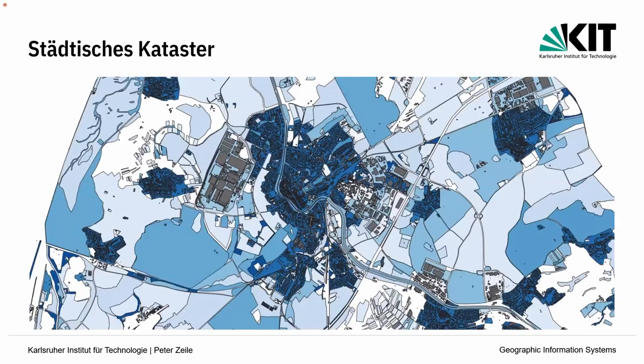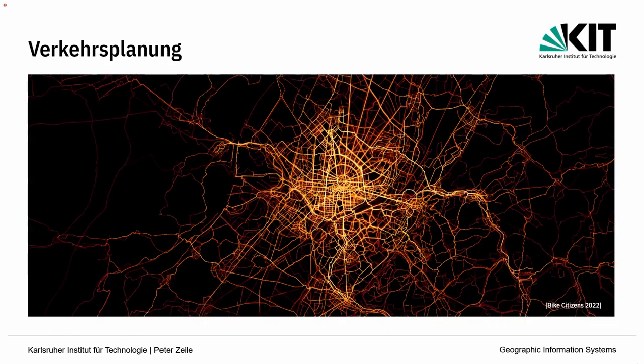Angesprochen ist schon das städtische Kataster – da sind sehr viele Datensätze drin, mit denen wir arbeiten können. Wir haben auch sehr schöne Datensätze für die Verkehrsplanung, wo wir anhand von Bewegungsströmen, von Zählschleifen oder mit der sogenannten Volunteer Geographic Information, wo Nutzer Daten zur Verfügung stellen, schöne Strecken abbilden und Dichten darstellen können. Das hier ist Karlsruhe – man sieht sehr gut diesen städtischen Grundriss und wo Fahrradfahrer am meisten unterwegs sind.